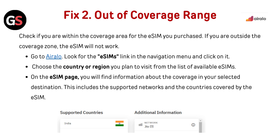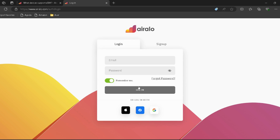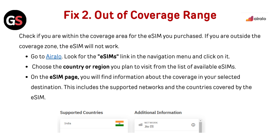Fix 2: Out-of-coverage range. Check if you are within the coverage area for the eSIM you purchased. If you are outside the coverage zone, the eSIM will not work. Go to Airalo — I have provided the link in the description. Look for the eSIM's link in the navigation menu and click on it. Choose the country or region you plan to visit from the list of available eSIMs. On the eSIM page, you will find information about the coverage in your selected destination, including the supported networks and the countries covered by the eSIM.